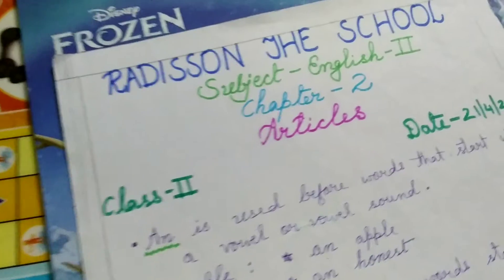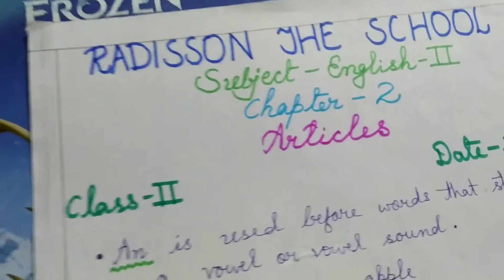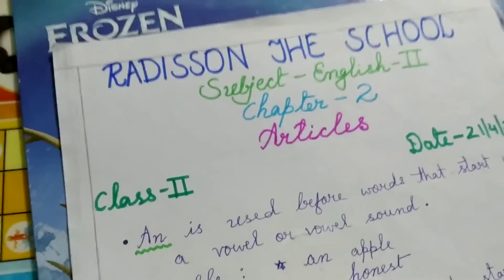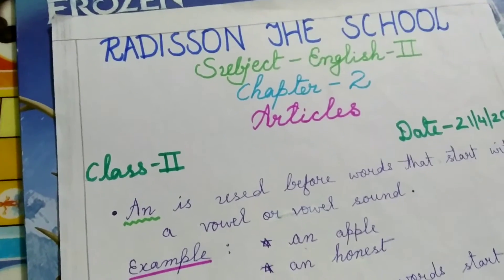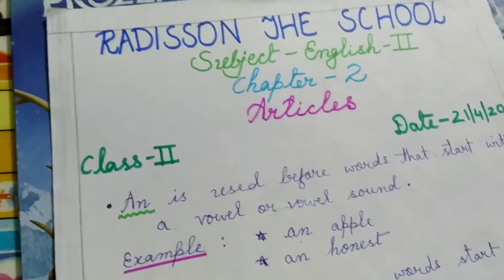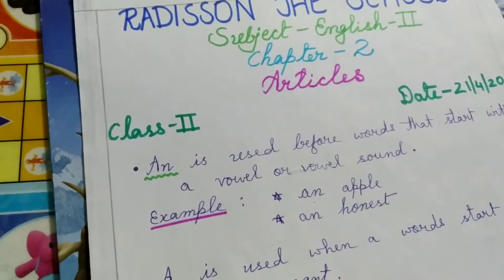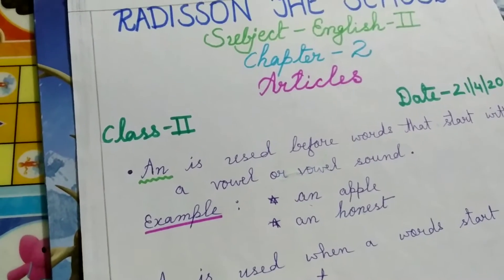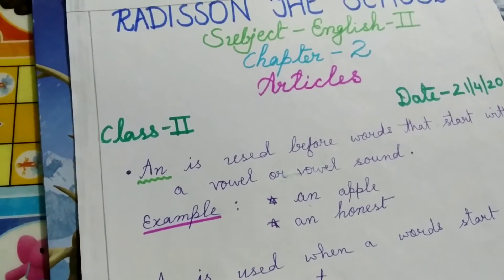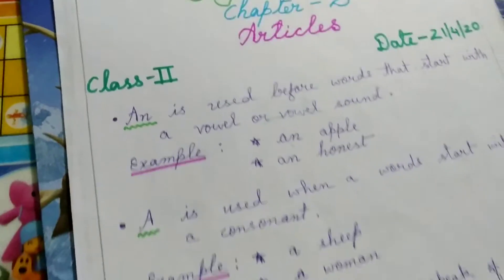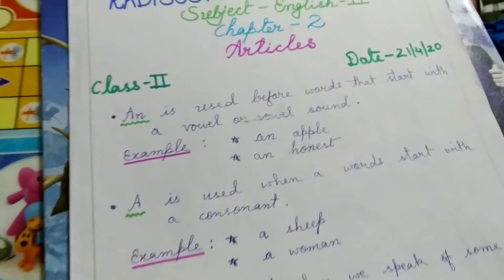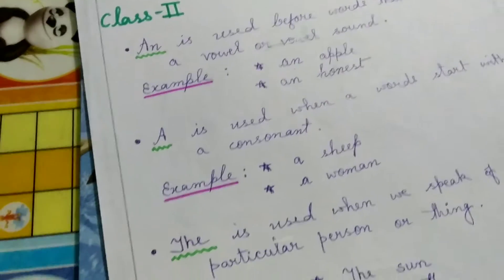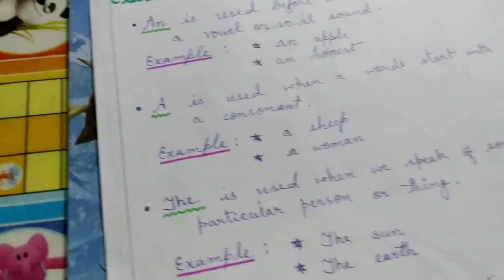Uska heading kya hai? Articles. You know what is articles? There are 3 articles: A, AN, and The. Yeh 3 articles hotay hain: A, AN, or The.